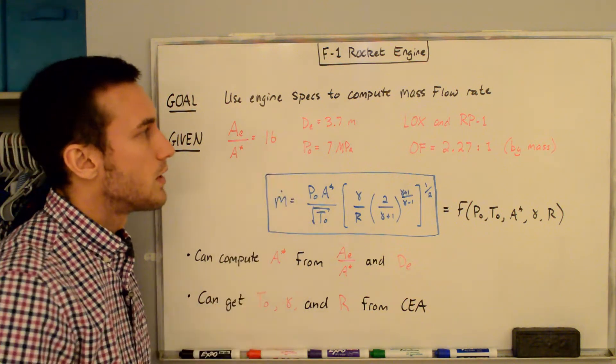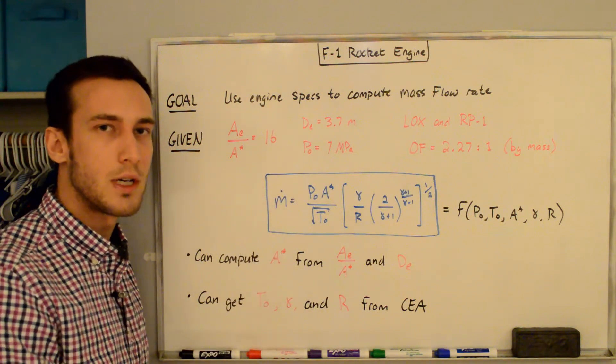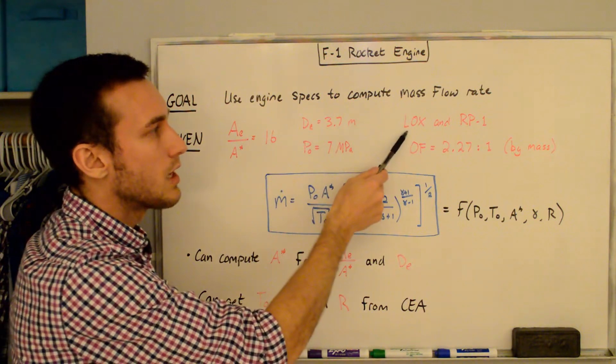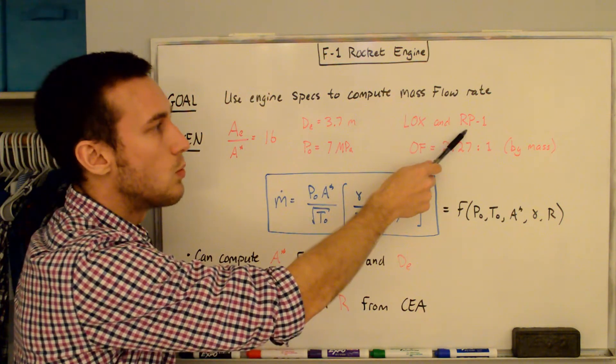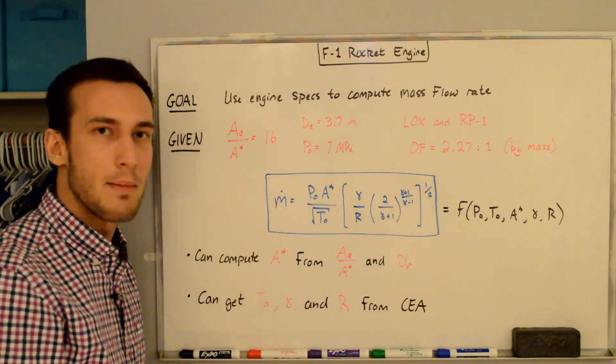The exit diameter is 3.7 meters. The stagnation pressure, which is the pressure in the combustion chamber or reservoir, is 7 megapascals. The engine uses an oxidizer of liquid oxygen and a fuel of RP1, and the oxidizer to fuel ratio is 2.27 to 1 by mass.